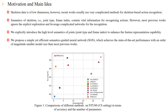Skeleton data is of low dimension — one frame is often represented by a vector of only about 100 dimensions. However, recent works usually use very complicated models to model skeleton sequences, which is not suitable.